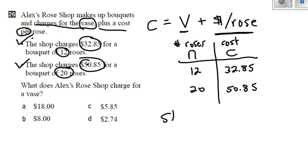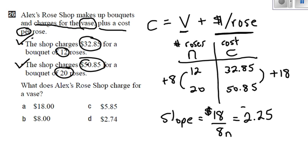Let's look at the slope of this line. You can either use the slope formula or you can do first differences. So 50.85 minus 32.85, that's $18. 20 minus 12, that's 8. So the slope is 18 over 8. And it's a dollar question, so I'm always going to reduce to two decimal places. That's 2.25. Therefore, it's $2.25 per rose.